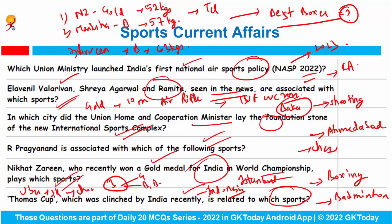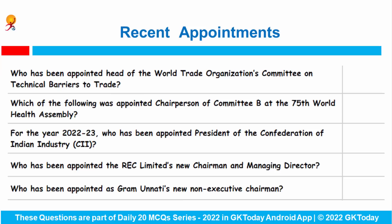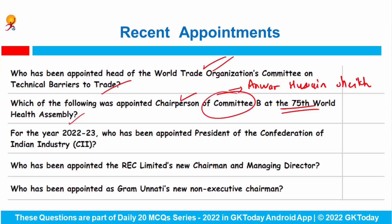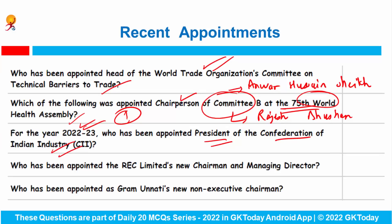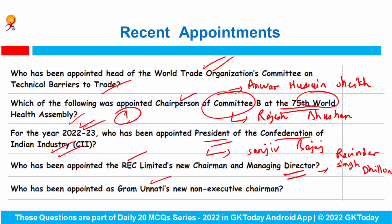Now some important appointments. Who was appointed head of the World Trade Organization's Committee on Technical Barriers to Trade? The answer is Mr. Anwar Hussein Shaikh. Which of the following was appointed Chairperson of Committee B at the 75th World Health Assembly? The answer is Mr. Rajesh Bhushan. For the year 2022-23, who has been appointed the President of the Confederation of Indian Industry? The answer is Mr. Sanjeev Bajaj. Who has been appointed as REC Limited's new Chairman and Managing Director? The answer is Mr. Ravinder Singh Dhillon. Who has been appointed as the 39th new non-executive Chairman? The answer is Mr. Sunil Arora.